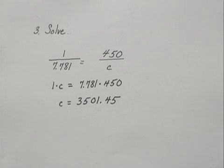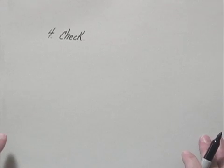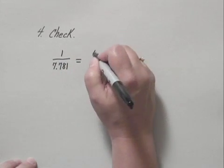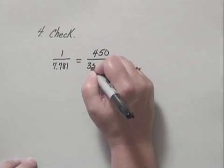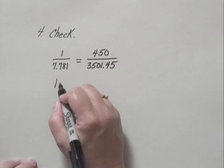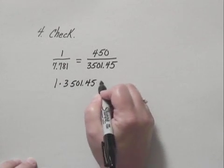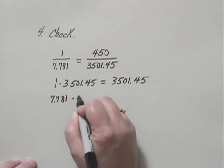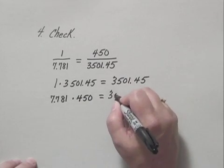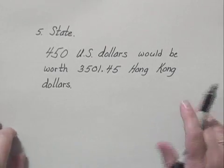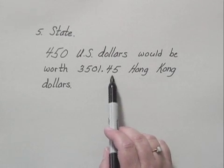We have a possible solution and move to step four: check our answer. To check, we rewrite the proportion: 1 over 7.781 equals 450 over 3,501.45. Checking cross products: 1 times 3,501.45 is 3,501.45, and 7.781 times 450 is also 3,501.45. The cross products are the same, so the answer checks. The answer to Part A: 450 U.S. dollars would be worth 3,501.45 Hong Kong dollars.